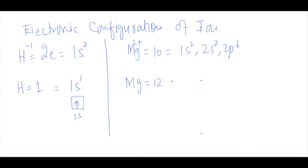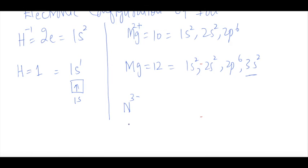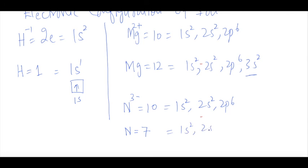The electronic configuration of the magnesium atom is 1s2, 2s2, 2p6, and 3s2. When forming an ion, the outermost electrons are lost first. So when magnesium loses 2 electrons, those in the outermost shell are removed. For N³⁻: nitrogen has 7 electrons; gaining 3 gives 10 electrons total. So the configuration is 1s2, 2s2, and 2p6 — the same as magnesium ion. The neutral nitrogen configuration is 1s2, 2s2, and 2p3.